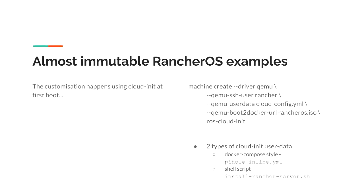When I didn't know much about RancherOS, I thought it was a cooler way to do immutable, but in actual fact it's not immutable. The operating system itself is immutable, but once users get involved all of their customization happens at boot time. This means you might have an operating system that is lovely and fast to boot, but it's not ready — and what you want is for it to come up as, say, a load balancer that's up and serving traffic.